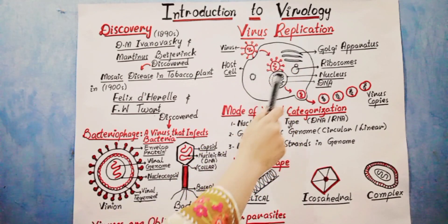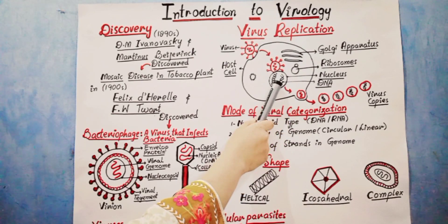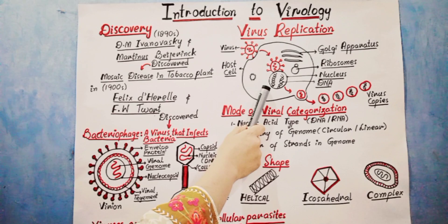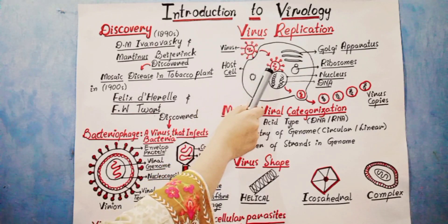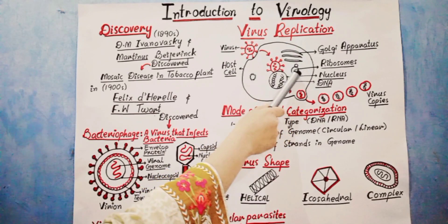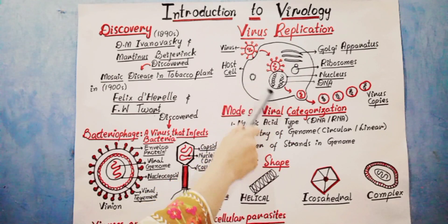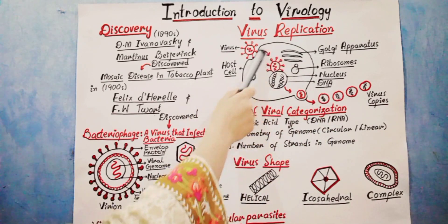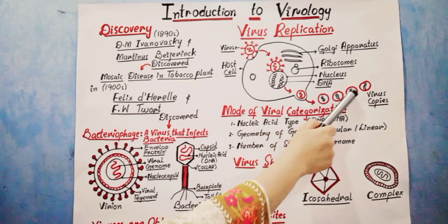Here we have the normal host cell, which contains the Golgi apparatus, ribosomes, the nucleus with DNA genetic material, and all the essential components a cell contains. For replication, the virus attacks the host cell. When the virus hijacks the host machinery, it needs ribosomes, enzymes, and other cellular components. The host cell then copies the viruses — this is the process of viral replication.